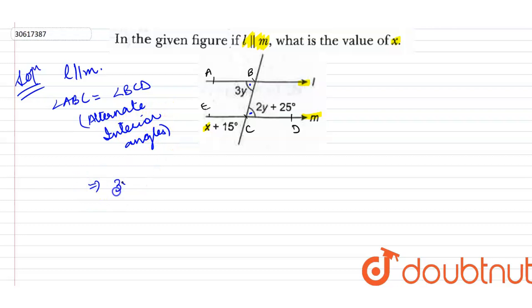So what I got here: 3Y is equal to 2Y plus 25 degrees. So Y value is equal to 25 degrees.